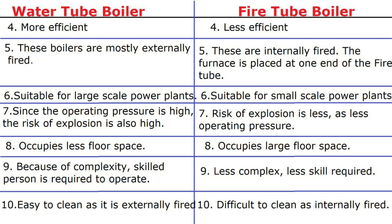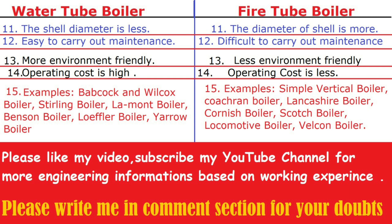Water tube boilers are mostly externally fired, while fire tube boilers are internally fired, with the furnace placed at one end of the fire tube. Water tube boilers are suitable for large-scale power plants while fire tube boilers are for small-scale power plants. Smoke tube boilers occupy less floor space, while water tube boilers occupy large floor space. Because of complexity, a skilled person is required to operate water tube boilers, whereas fire tube boilers are less complex so less skill is required. Water tube boilers are easy to clean as they are externally fired, and difficult to clean as they are internally fired.